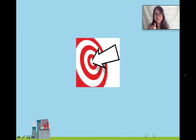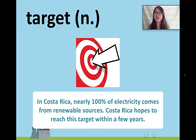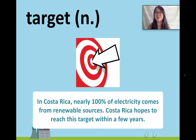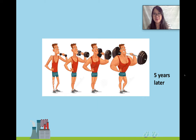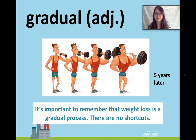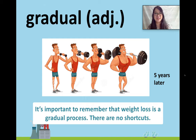Next: target. In Costa Rica, nearly 100% of electricity comes from renewable sources. Costa Rica hopes to reach this target within a few years — really amazing work. Next: gradual. Five years later, we can see he has changed. It's important to remember that weight loss is a gradual process. There are no shortcuts.